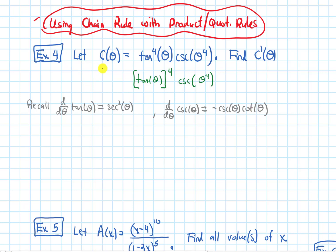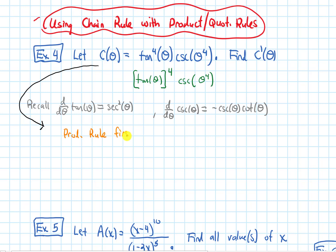When we look at this function and want to take its derivative, we have two functions being multiplied. So because of that, we have to do product rule first. Later we'll take the derivative of each function individually, and those may require chain rule, but initially it's the tangent to the fourth function times the cosecant of theta to the fourth function — so it's product rule first.